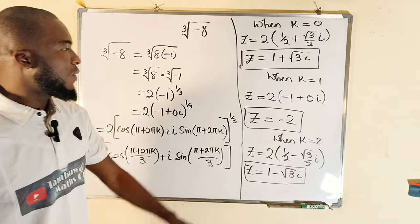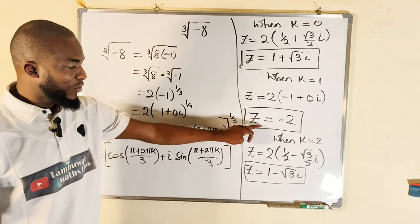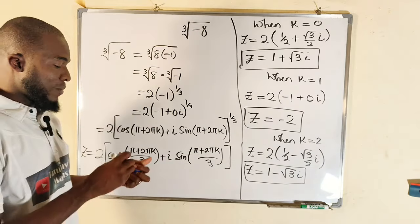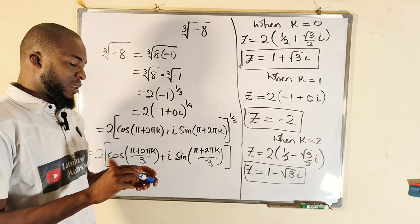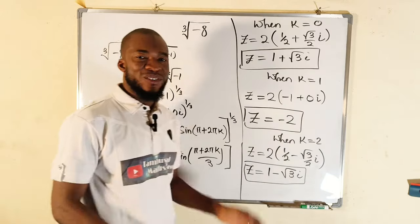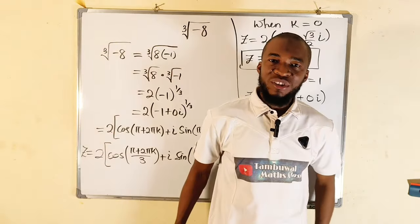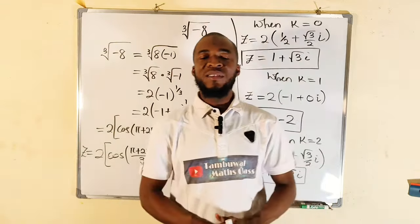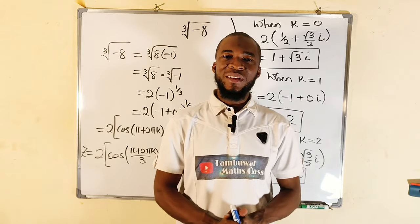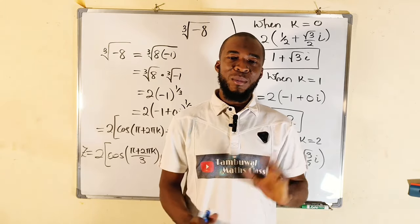We have three solutions — 1 + √3i, −2, and 1 − √3i — obtained using trigonometric ratios. Thank you for watching. Do share with your learning colleagues, and don't forget to subscribe to my YouTube channel for more exciting videos. Bye!